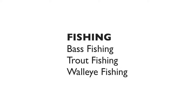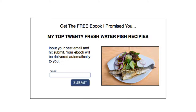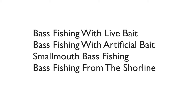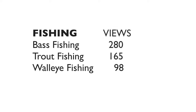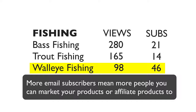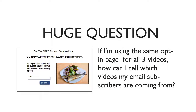Now my secret sauce. Suppose your niche is fishing — you've created a video on bass fishing, trout fishing, and walleye fishing. You've created an opt-in page with a free bonus to get subscribers to your email list. When you look at your stats in Creator Studio, you see you've got 280 views on your bass fishing video, so you might think that's your best video and decide to create more bass fishing videos. But is it really our best video just because it has the most views? If we go into our autoresponder account and we see that we've got 46 opt-ins from the walleye fishing video, then that tells us this is really our best video, even though it doesn't have nearly the views. Here's the huge question: if I'm using the same opt-in page for all three videos, how can I tell which videos my email subscribers are coming from? Right now, I simply can't tell.